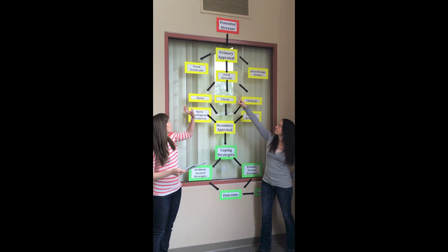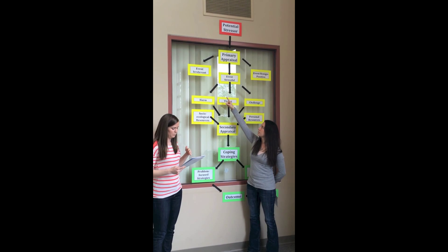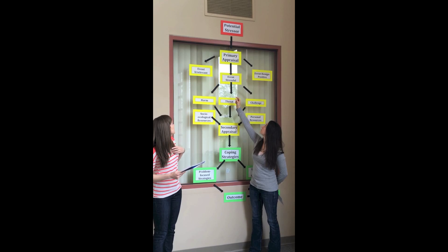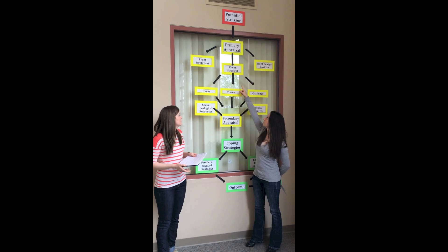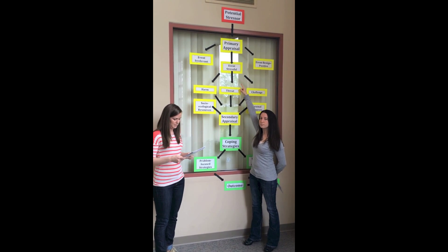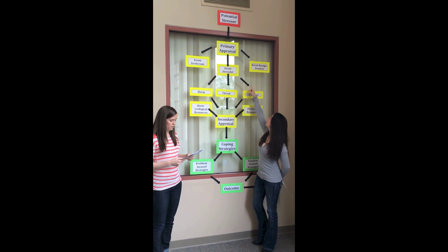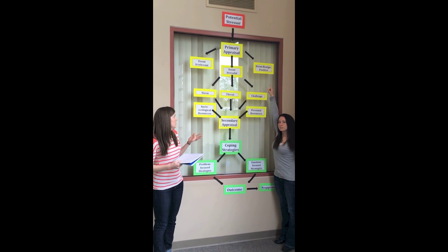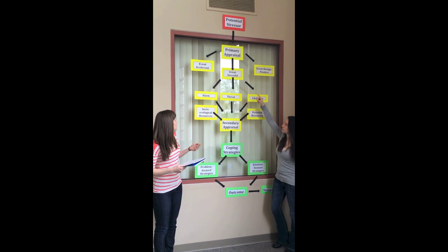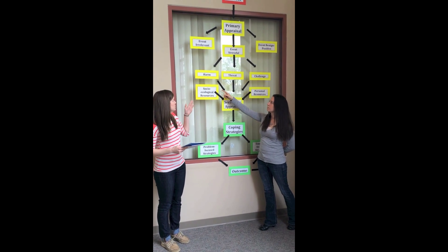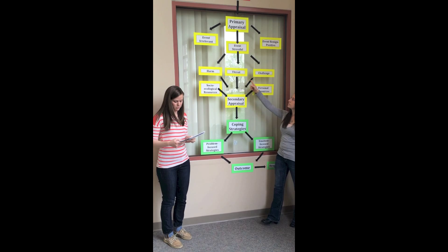There are three different categories that go along with this process. The individual determines if the event is irrelevant, meaning that it won't have any effect on their well-being; if it's stressful, which means it will have negative effects and can be harmful to their well-being; or if it's benign positive, which is where the results of the event will actually be positive. Once the individual determines that the event is stressful, they then determine if it is a harm, threat, or challenge.